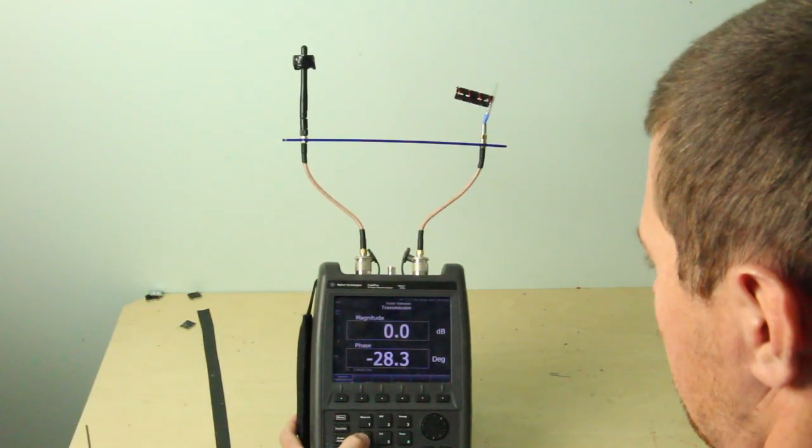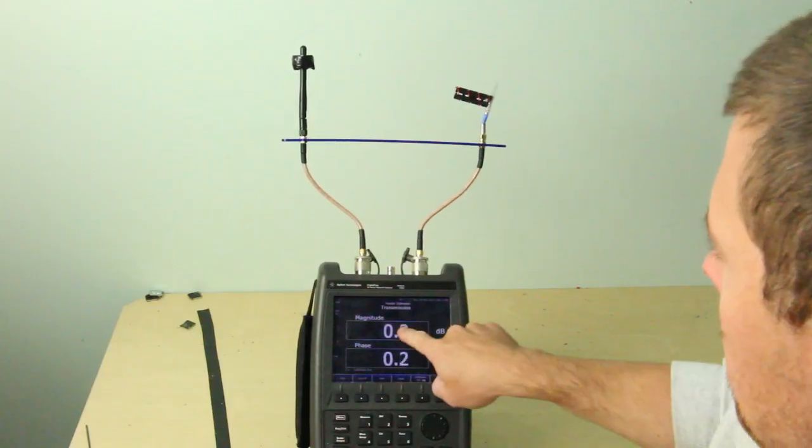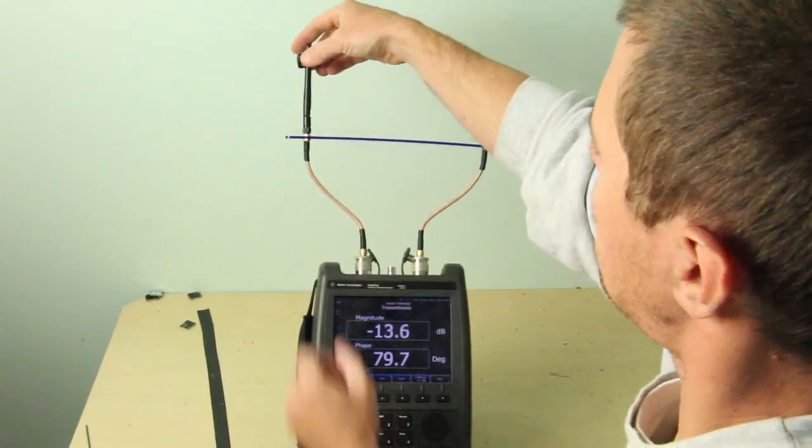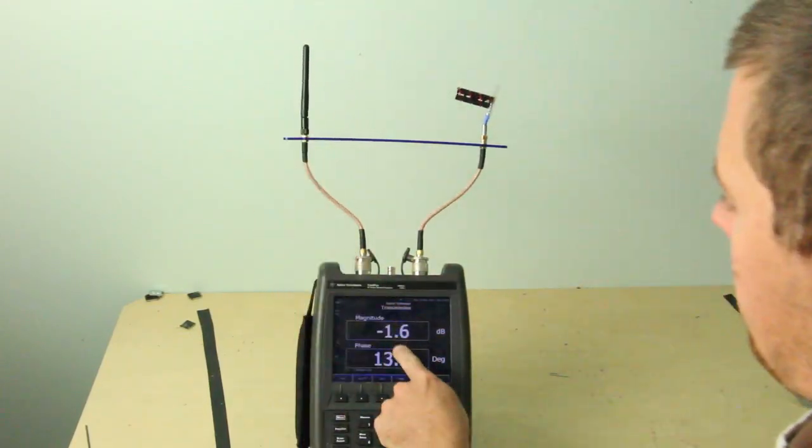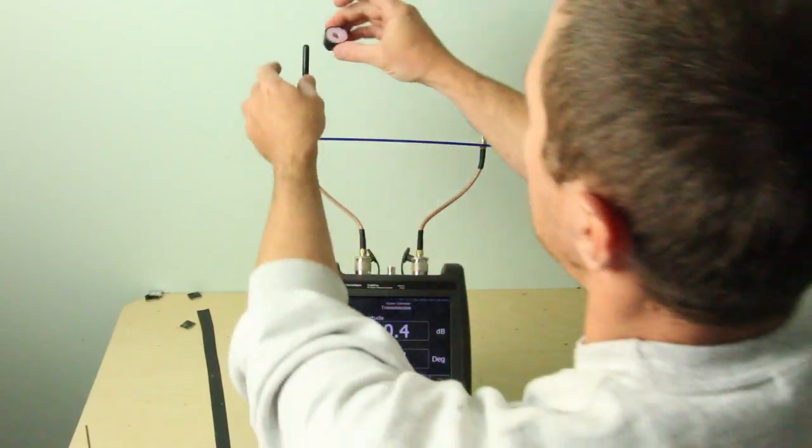Now I'm going to adjust my signal strength to zero and normalize everything out. Now watch what happens when I remove that cap. I dropped 1.6 dB.